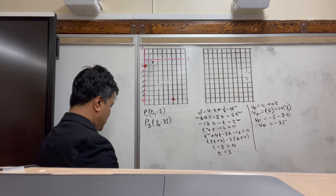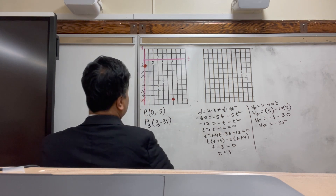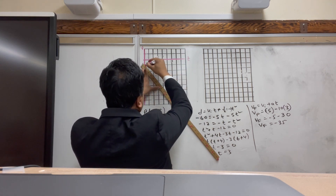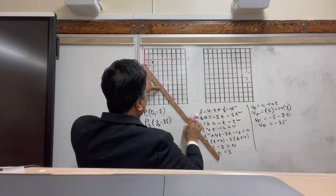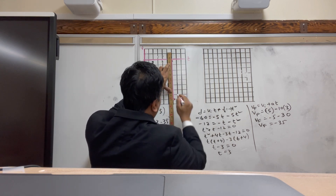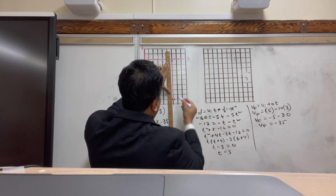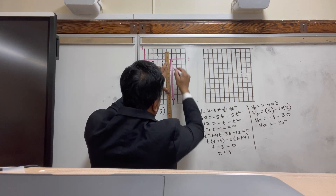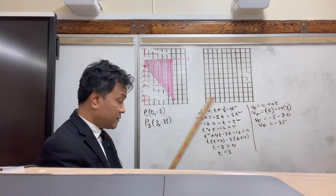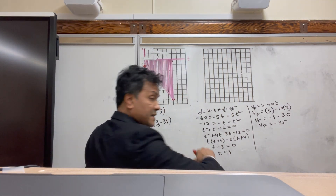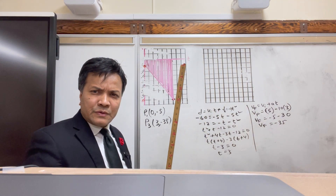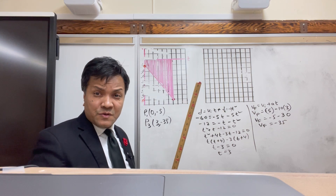Connect the two points with a straight line. Now shade the area under the graph. To find the shaded area, divide it into a triangle and a rectangle so you can use geometry.